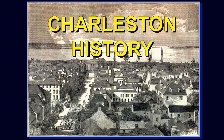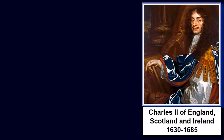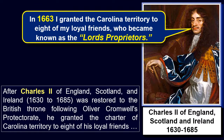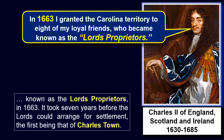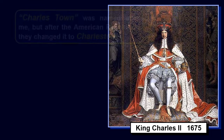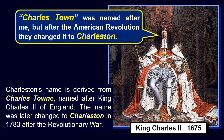Chapter 2: History of Charleston. After Charles II of England, Scotland and Ireland (1630–1685), was restored to the British throne following Oliver Cromwell's protectorate, he granted the Charter of Carolina Territory to eight of his loyal friends, known as the Lords' Proprietors, in 1663. It took seven years before the Lords could arrange for settlement, the first being that of Charlestown. Charleston's name is derived from Charlestown, named after King Charles II of England.